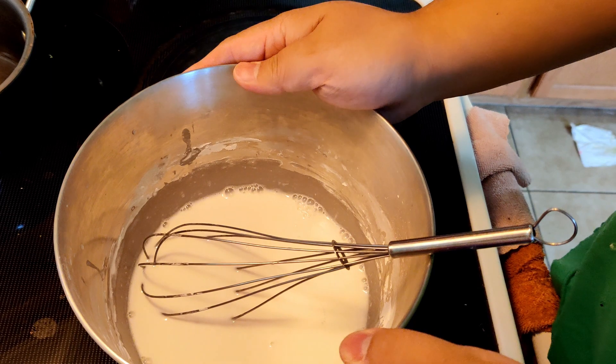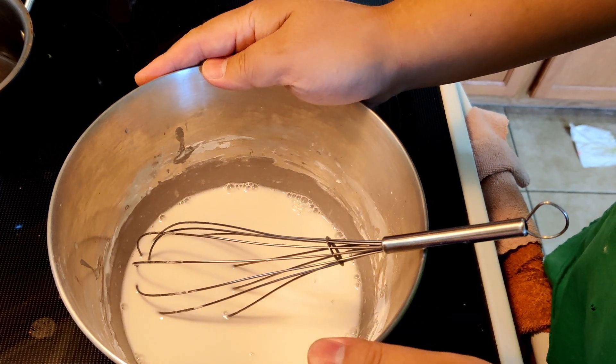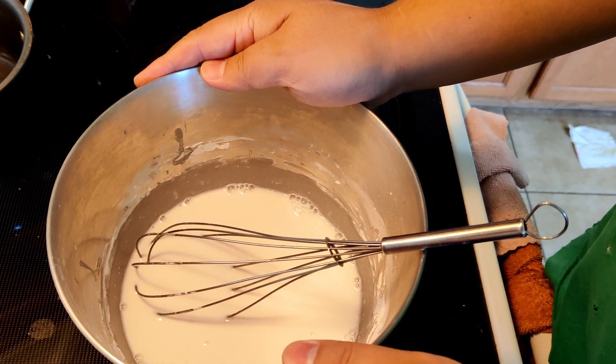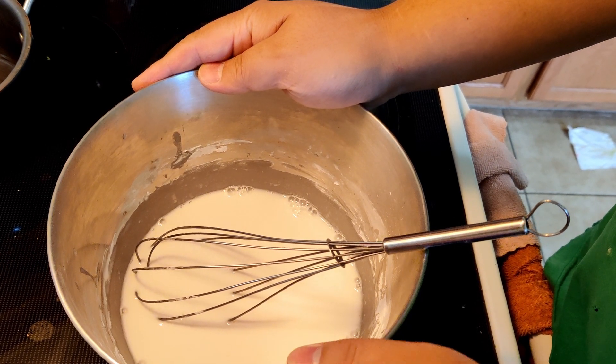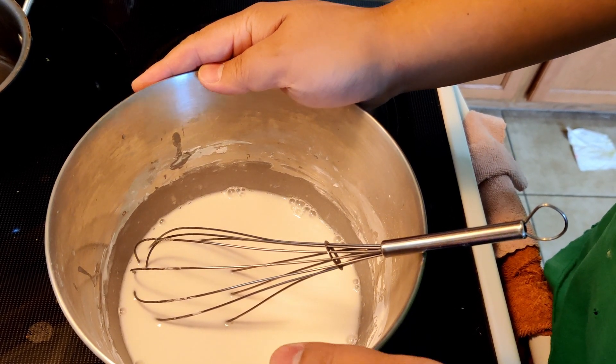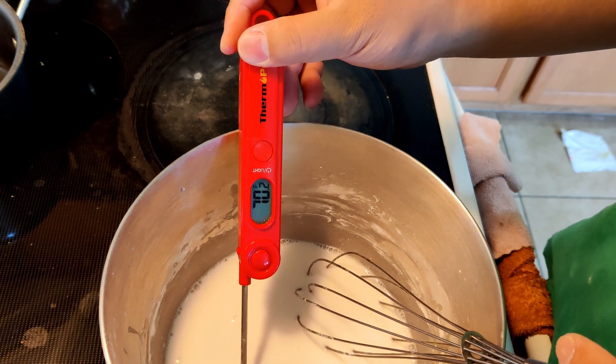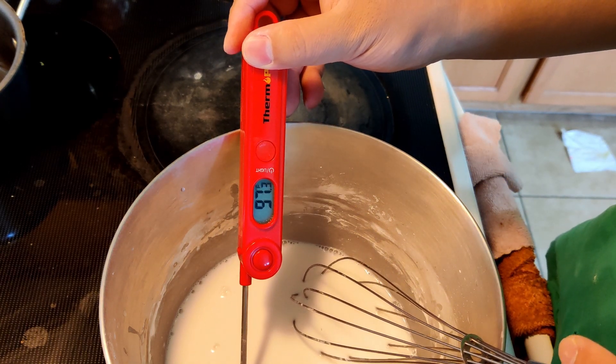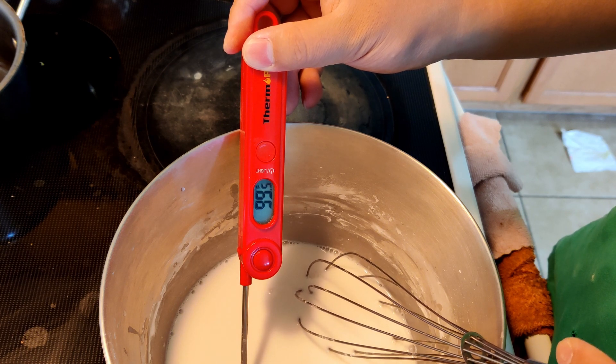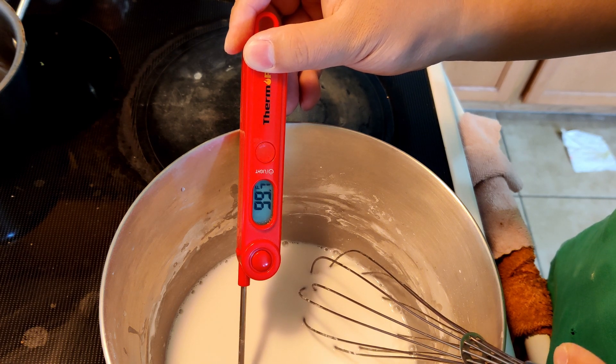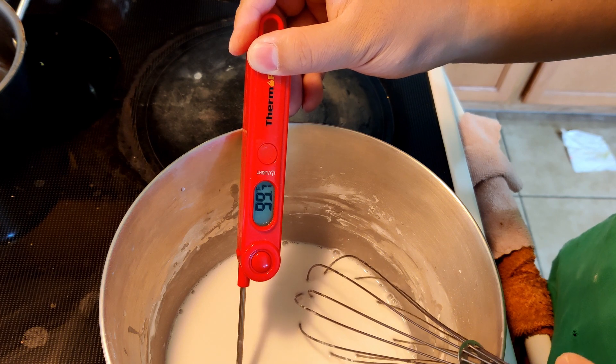So before we can proceed to the next step, we need to let the batter cool off down to 95 degrees F to 105 degrees F. So you can see the batter mixture right now is 99 degrees Fahrenheit, so we're good to go.